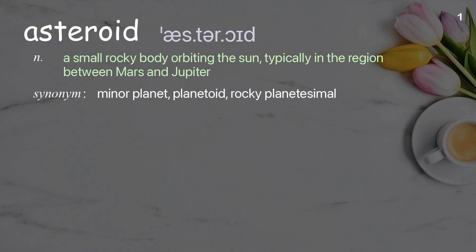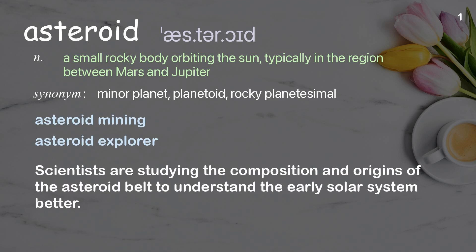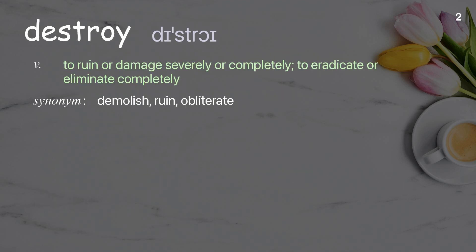Asteroid: a small rocky body orbiting the sun, typically in the region between Mars and Jupiter. Examples: asteroid mining, asteroid explorer.